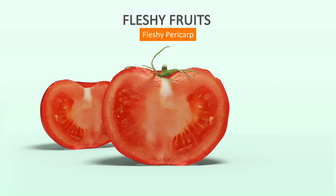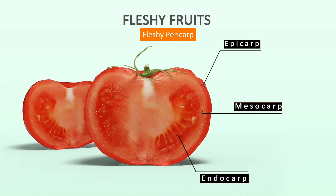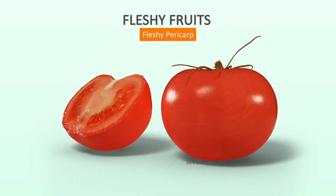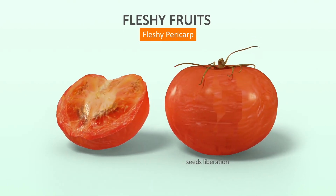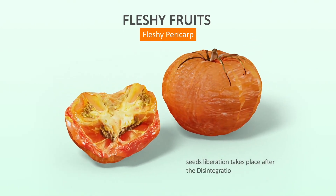In fleshy fruits, the pericarp is fleshy, and at maturity they are differentiated into epicarp, or exocarp, mesocarp, and endocarp. In most of the fleshy fruits, liberation of seeds takes place only after the disintegration of pericarp.